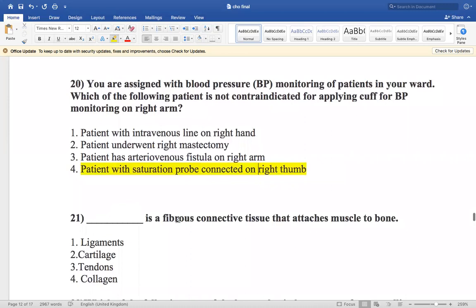Now the next question is: dash is a fibrous connective tissue that attaches muscles to bone. Ligament, cartilage, tendons, or collagen? So muscle to bone is tendons. So option number three is the right answer.